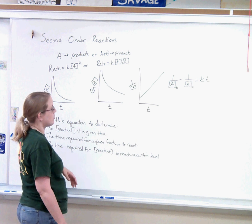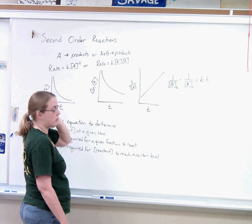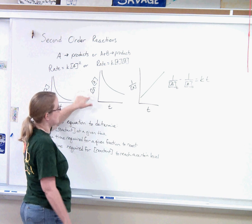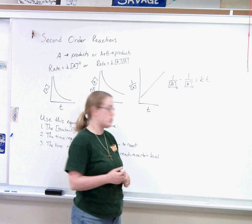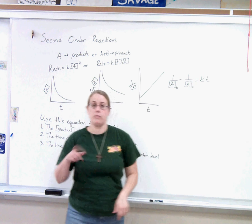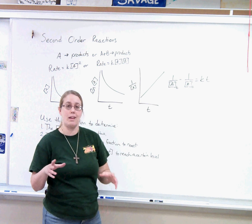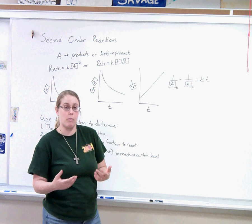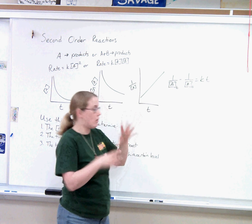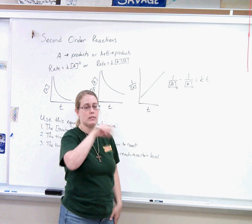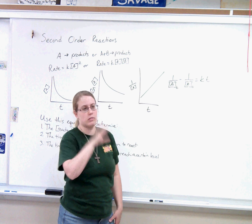Just to recap how you can tell the difference between first-order and second-order. First-order: the natural log graph will be a straight line. Second-order: the inverse graph will be a straight line. You can make these graphs and figure out whether it's first-order or second-order. On the AP test, they'll give you the graph. You won't have to make the graph, and you won't need a graphing calculator. But they'll give you the graph and you'll just pick out, okay, this graph is inverse, so therefore this reaction is second-order.